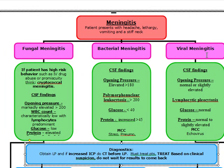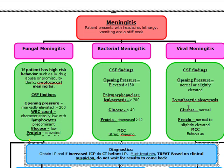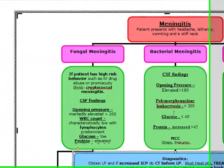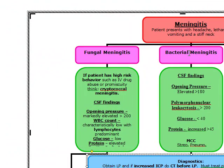The most common cause of viral meningitis is echovirus. When a patient comes in with headache, lethargy, vomiting, and a stiff neck, look at the glucose first. If it's normal, viral meningitis. If it's decreased, you're down to bacterial and fungal meningitis.